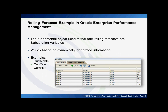So how do we do this in Oracle Enterprise Performance Management? The fundamental object used to facilitate rolling forecasts in the tool are what are called substitution variables. These are values based on dynamically generated information — for instance, current month, current year, current plan. These kinds of variables can be modified in one place and then referenced in many places throughout the application. This is very important when managing a rolling forecast.